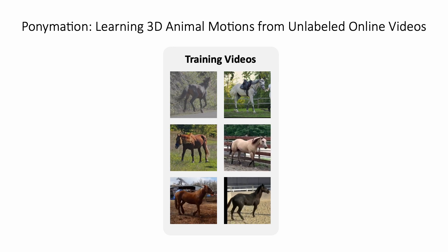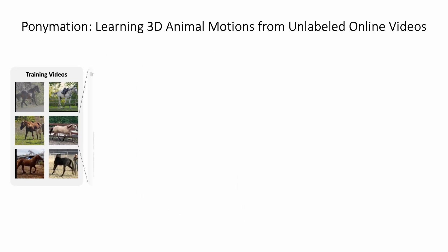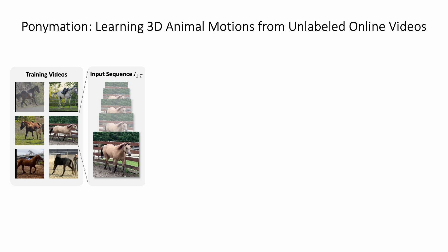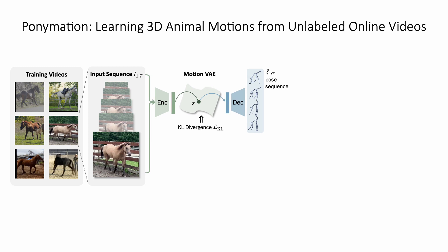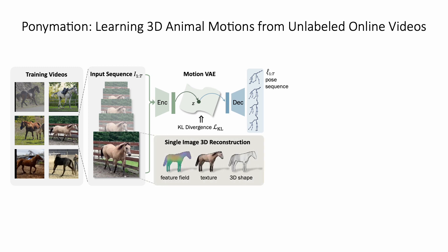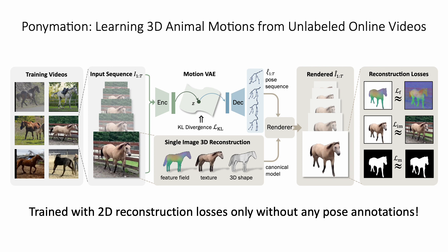PUNIMATION is trained on a diverse array of motion videos captured in the wild. During training, given a video clip, our model encodes the entire RGB sequence into a single latent code in the motion VAE latent space. It is then decoded into a sequence of articulated 3D poses. Paired with the single-frame 3D reconstruction models, we can render the entire articulated motion sequence into RGB frames and train the whole pipeline simply using image reconstruction losses on self-supervised DINO feature maps, RGB frames, and object masks.